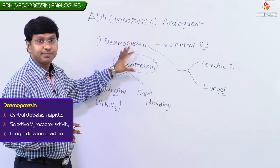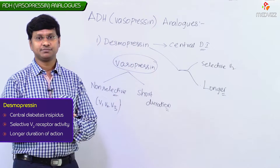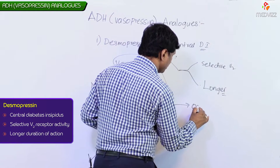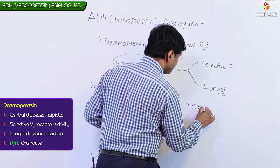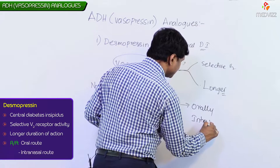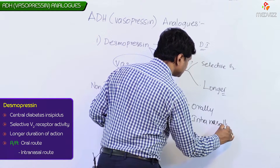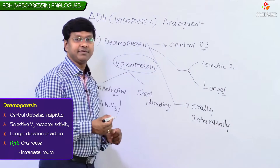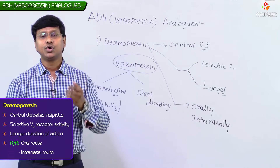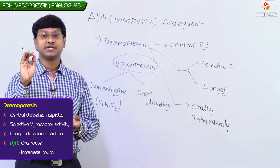That is the reason why we use the vasopressin analogue Desmopressin rather than vasopressin itself. This particular Desmopressin can be given orally and also intranasally.